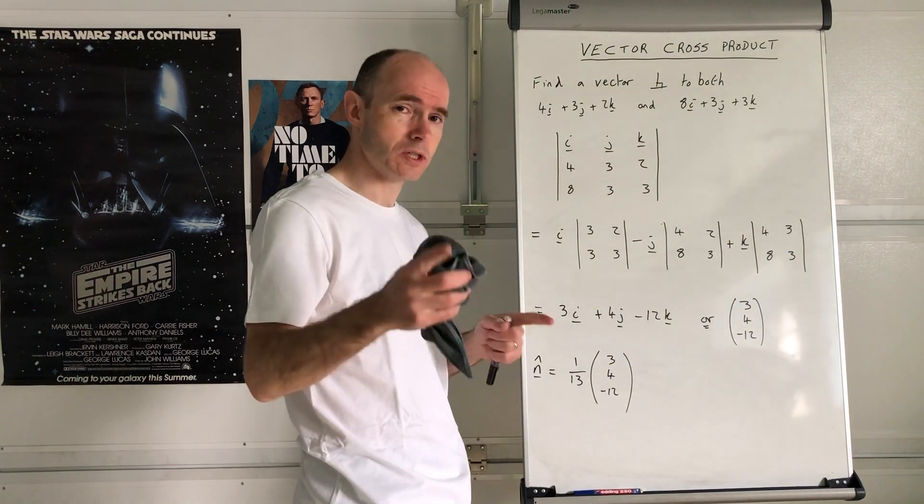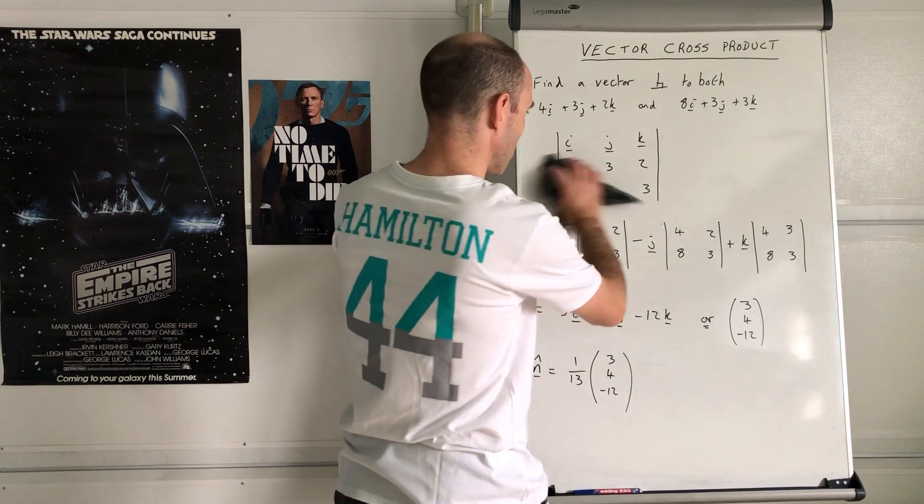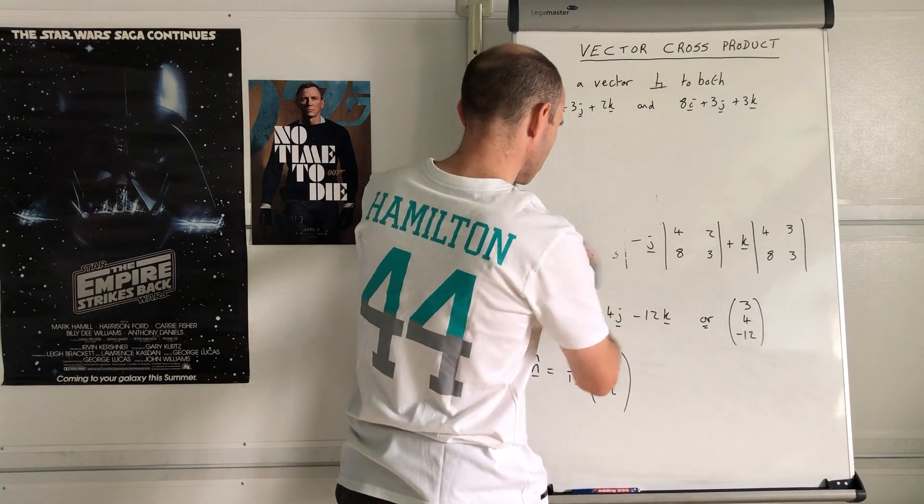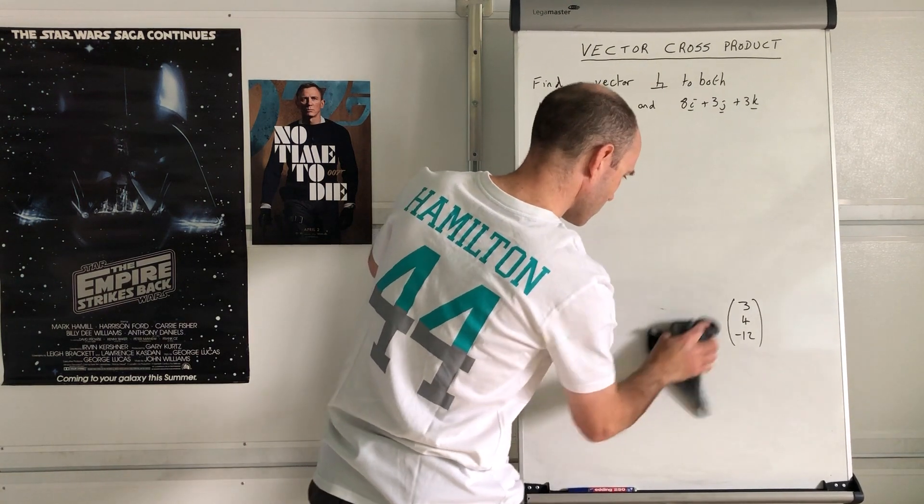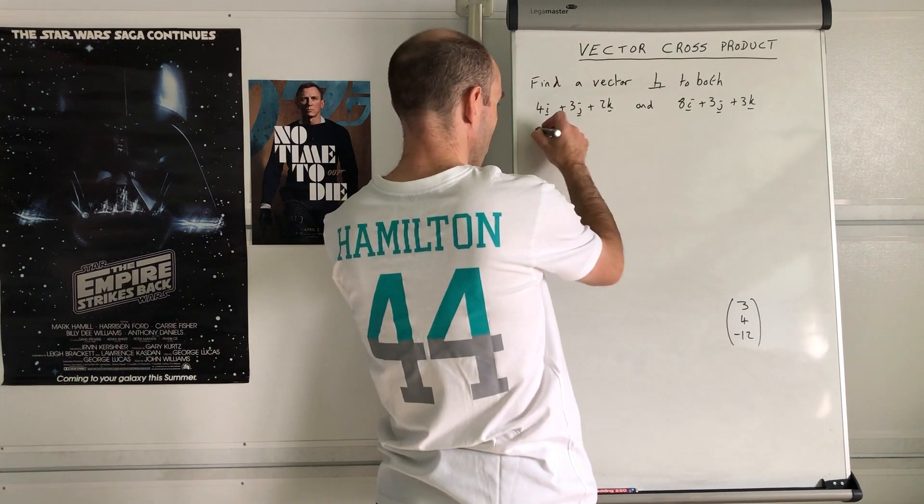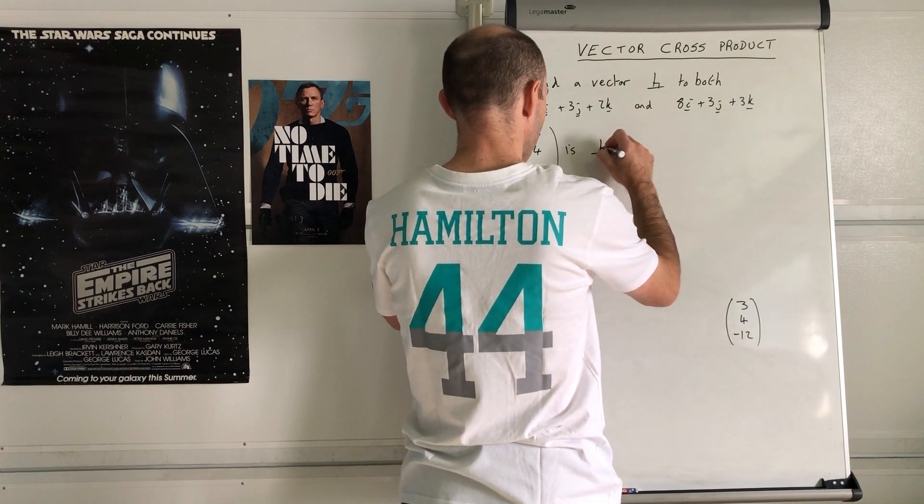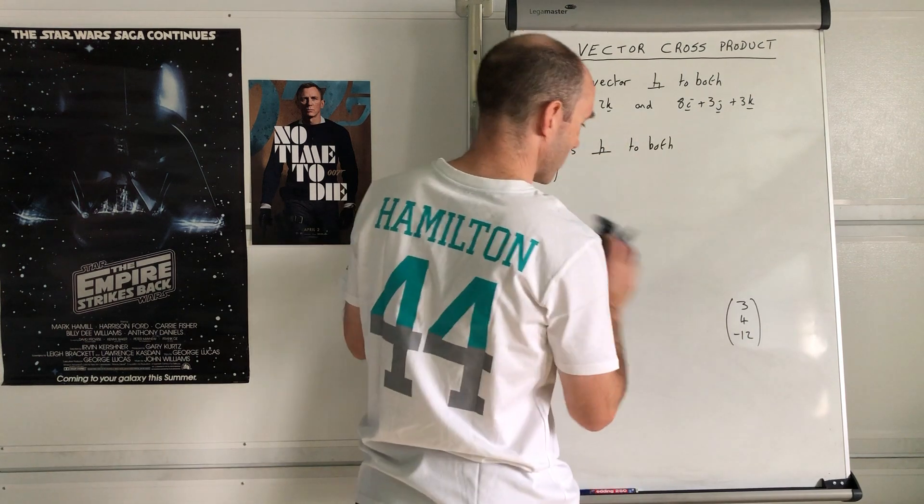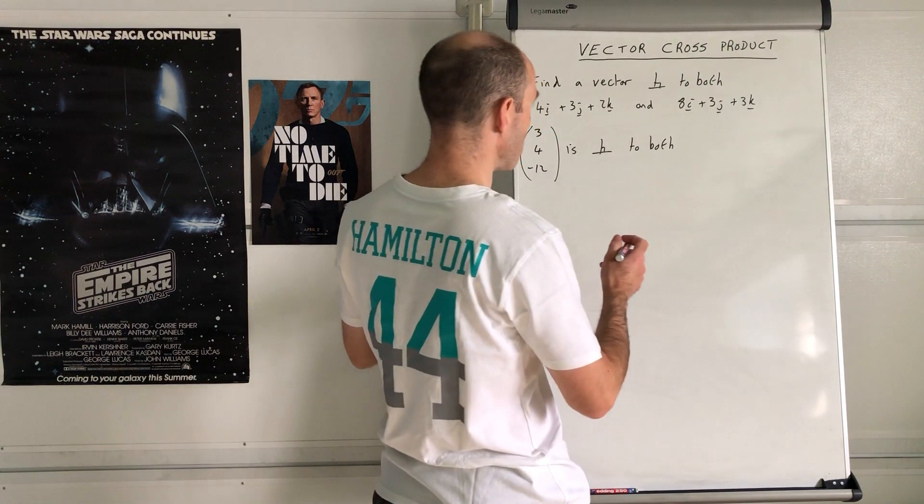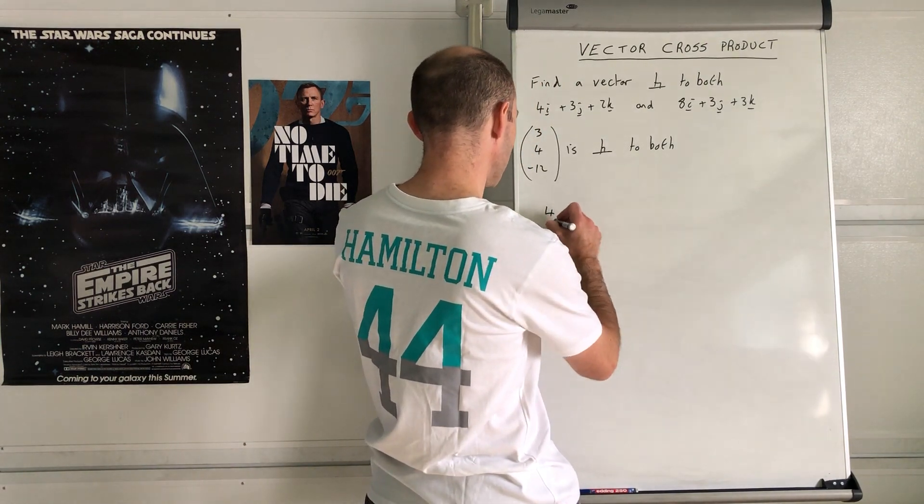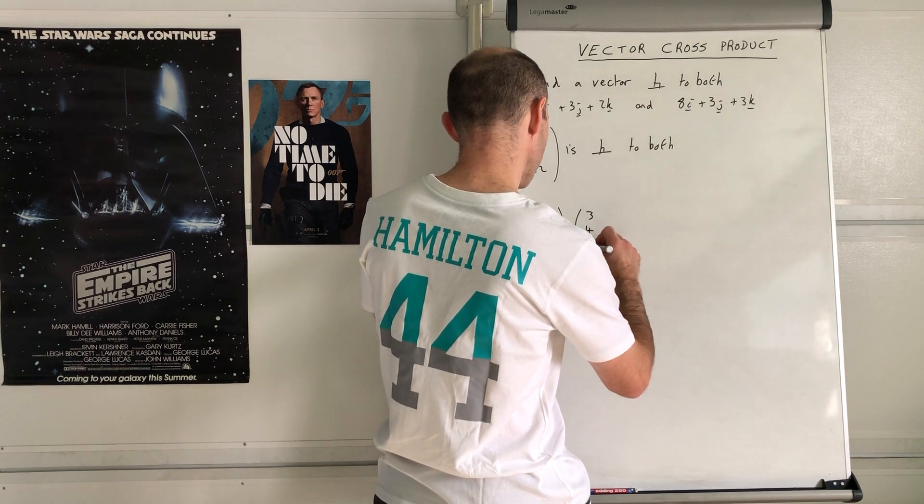How do you show that vector is perpendicular to those two? You use the scalar product to do it. So the scalar product between 4, 3, 2 dot 3, 4, negative 12, look at what you get.